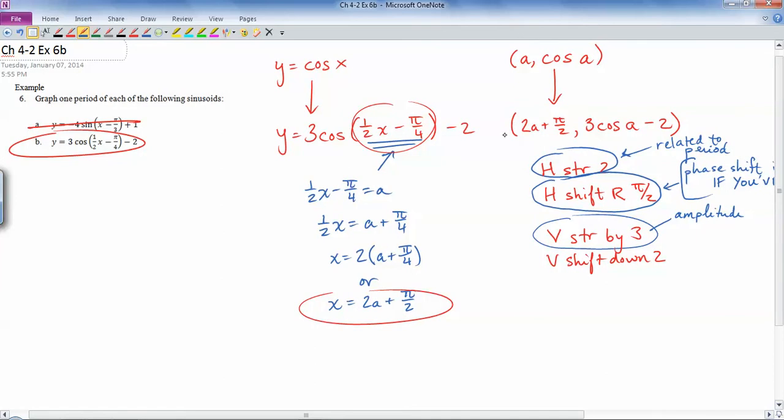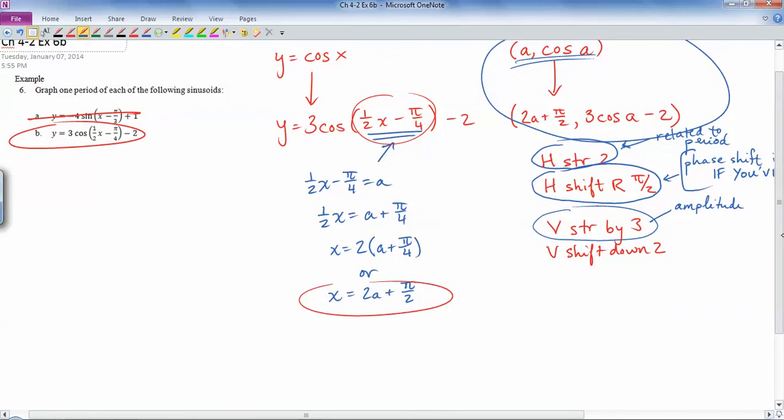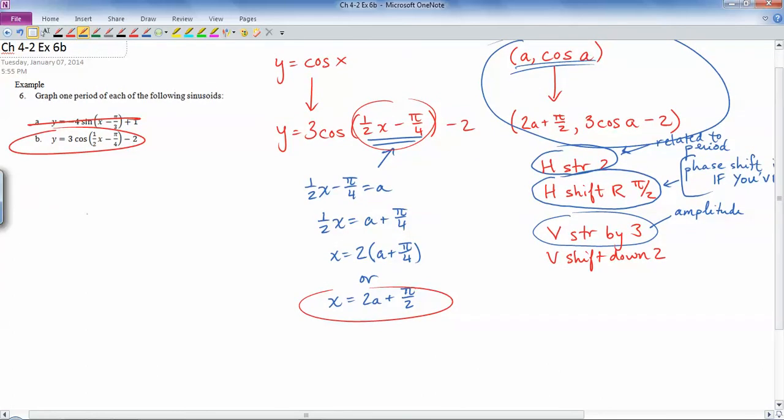So okay, so really in order to graph the thing, all you need is this part and some important points from the original function. So the original function cos a, if I just kind of do cos a right here, looks like this: starts at one, comes down, goes back up like that.